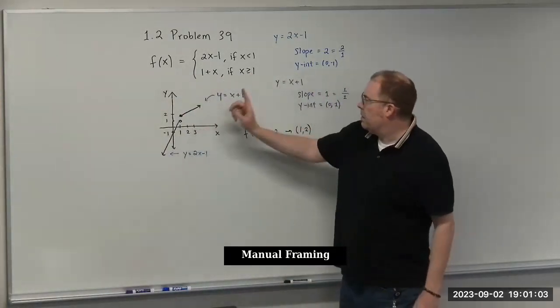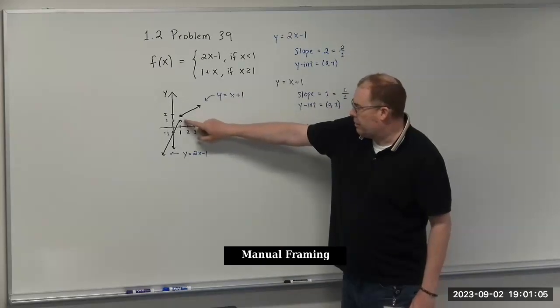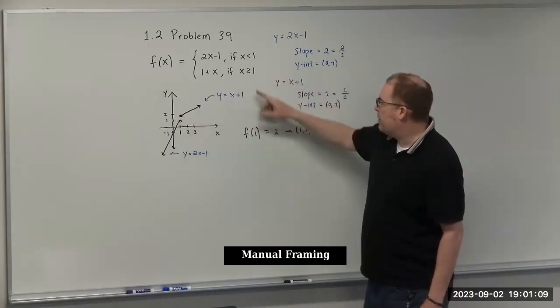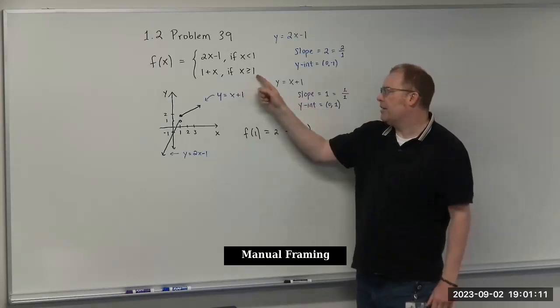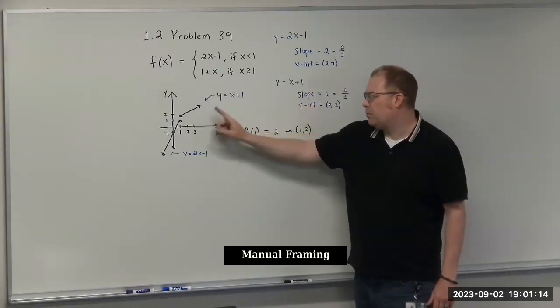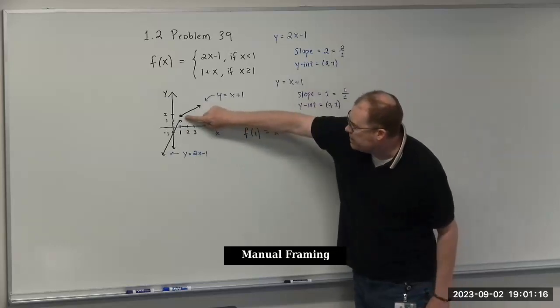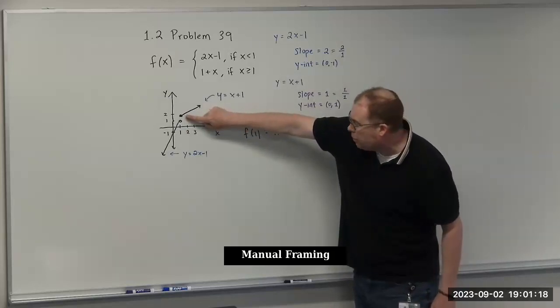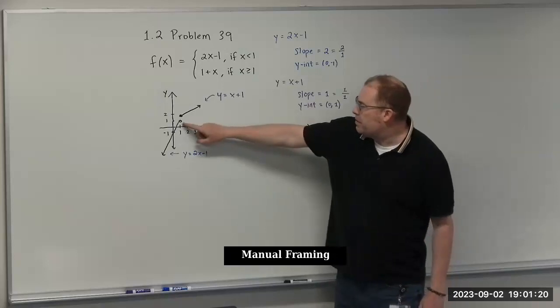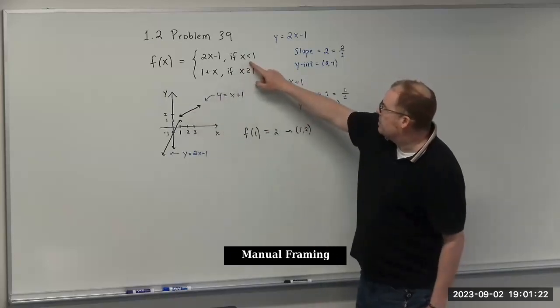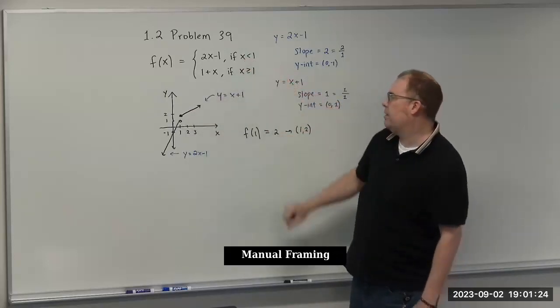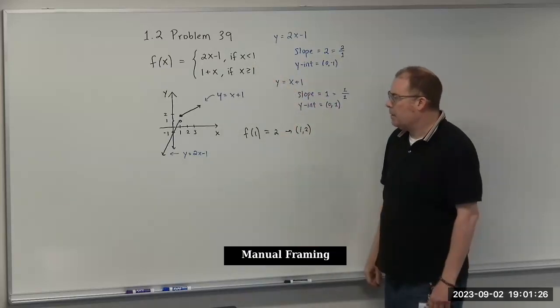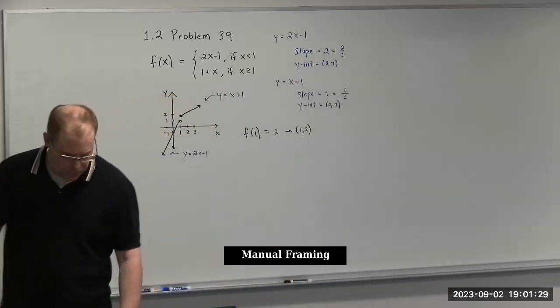That's basically the graph of our function. Remember that we have to look closely at what's going on here. By evaluating the function at this point, we get 2 here. So we use this component. When x is 1, we get exactly the output of 2. And then that means this point is open because this is strictly less than 1. So there's the result.